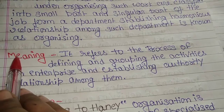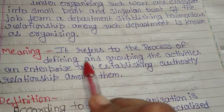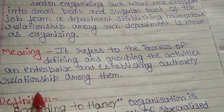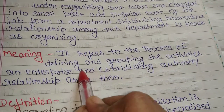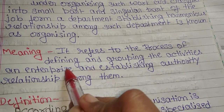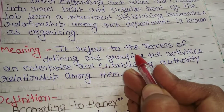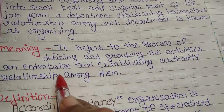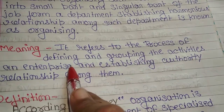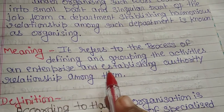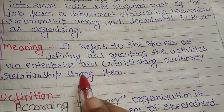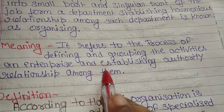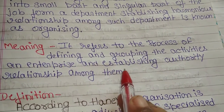If we talk about the meaning of organizing, it refers to the process of defining and grouping the activities of an enterprise and establishing authority relationships among them. So organizing means work is grouped, and within every group, an authority relationship is created so that people can help each other and complete the work together.